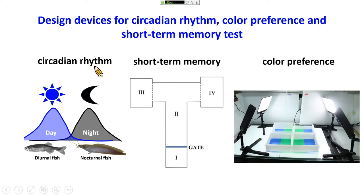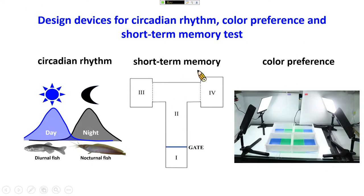The first tool is called the circadian rhythm measurement. The circadian rhythm means the day and night activity of the animal. For example, zebrafish are typically active during the day but rest at night, while catfish are very active at night. The second tool is called T-maze, which tests short-term memory. The third is color preference testing using containers with different color combinations, external light illumination, and a microscope or CCD camera to record fish locomotion and determine their color preference ranking.